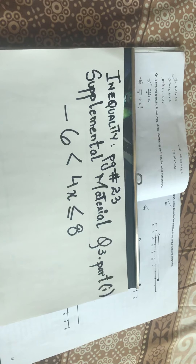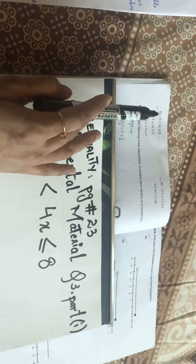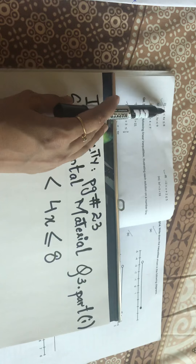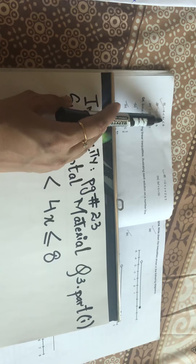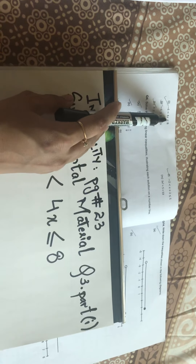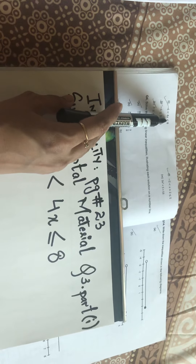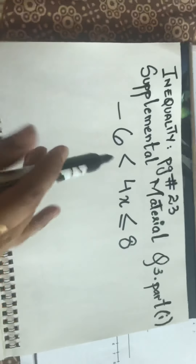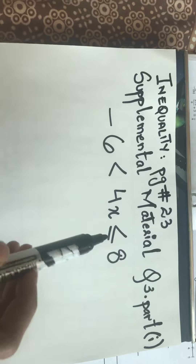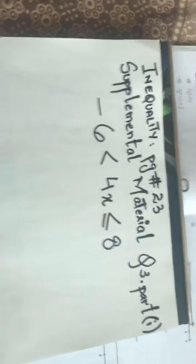Part I states that minus six is less than four X, which is greater than minus six, and four X is less than or equal to eight. This is what I've written in a bigger font in front of you.